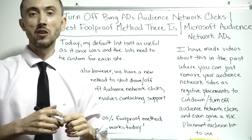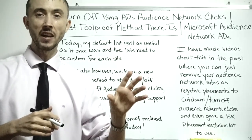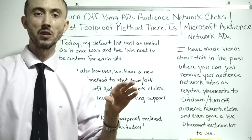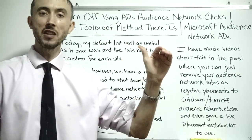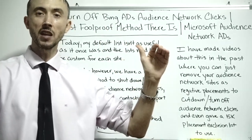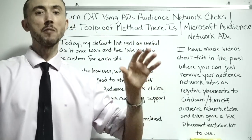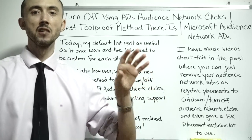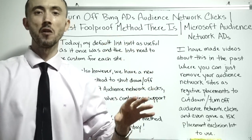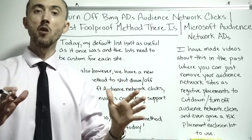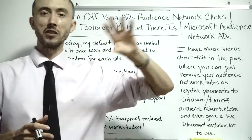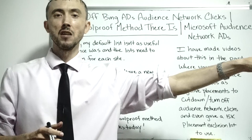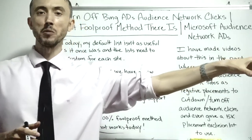In a lot of situations we've had client accounts where if you haven't shut off audience network clicks, this is 80% of the clicks in your account, and that makes it impossible to get an ROI from your ad spend. If you don't know what audience network clicks are, these are clicks from ads that run outside the Bing.com search engine.